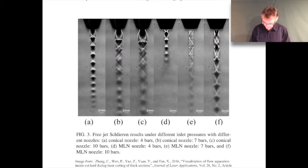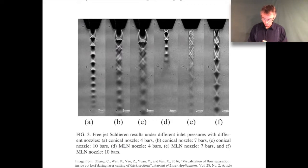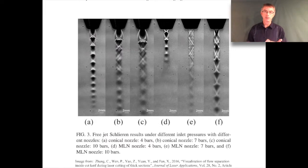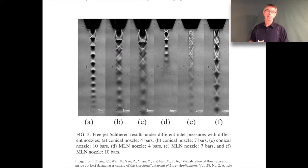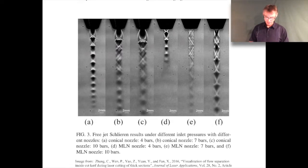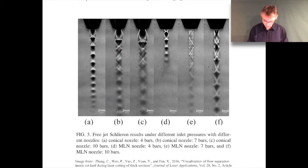The three on the right — I can't remember what MLN stands for — are basically converging-diverging nozzles, and you can see very different behavior coming out of them. These images are Schlieren photography images. Schlieren photography is an imaging technique for high-speed gas flows; it looks at the density gradient differences in the gas, and where you have a large density gradient you get a change in color, helping visualize the flow behavior.